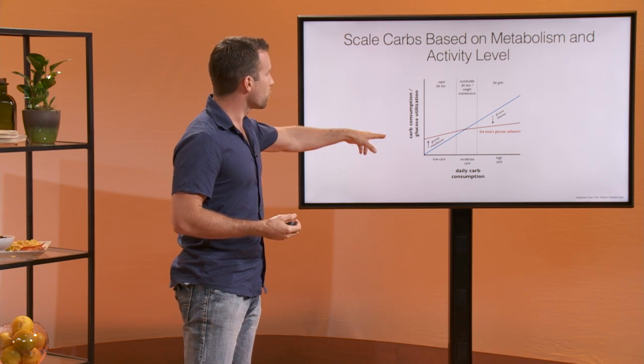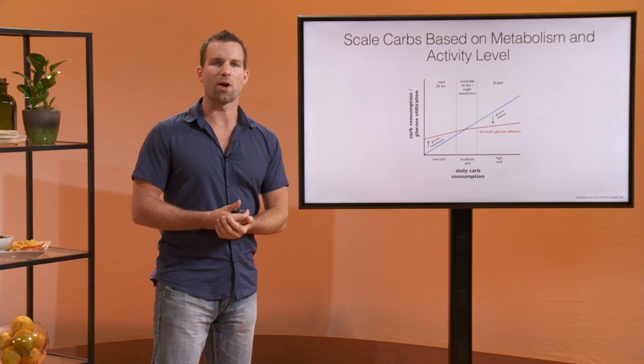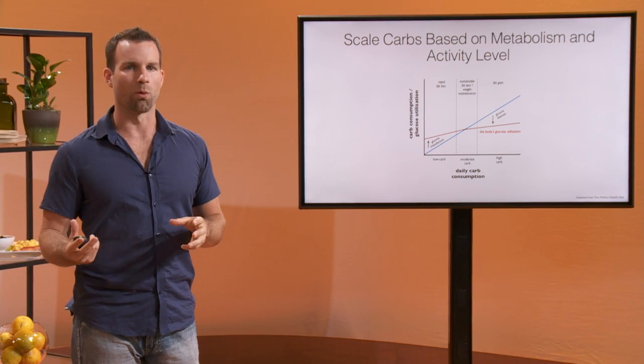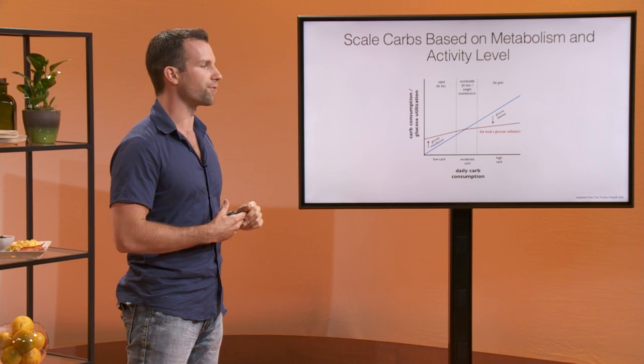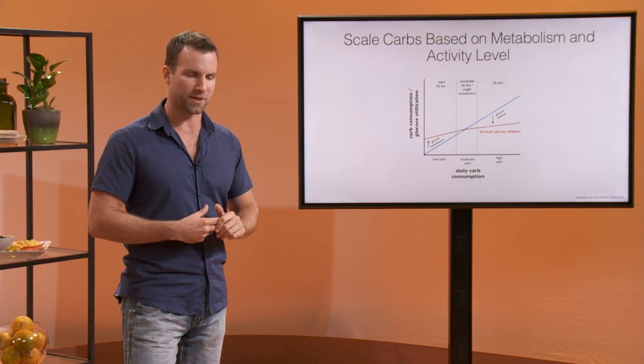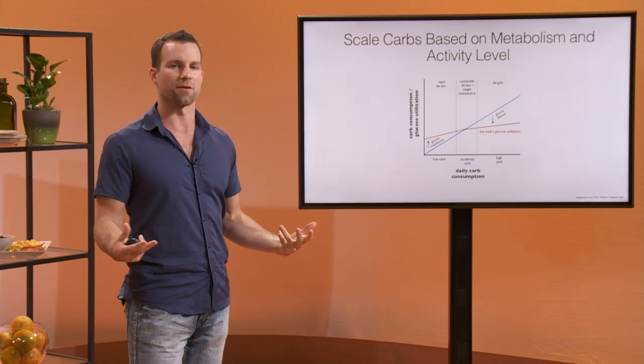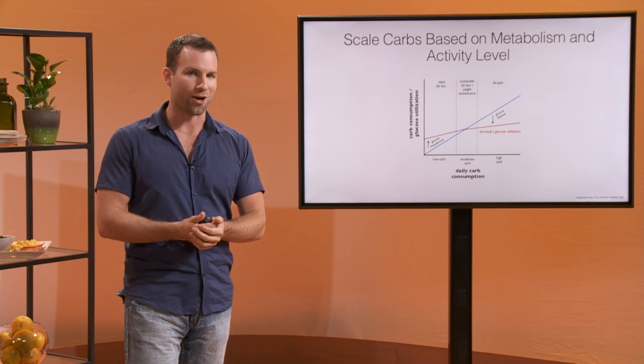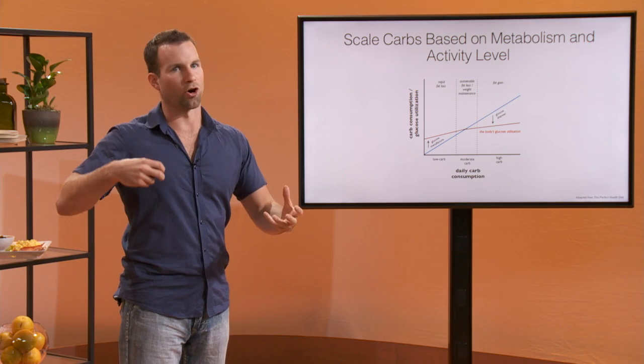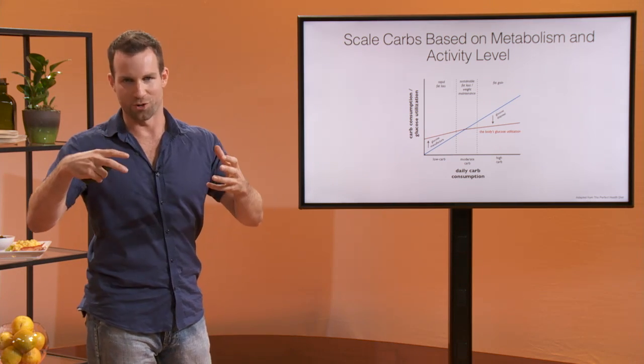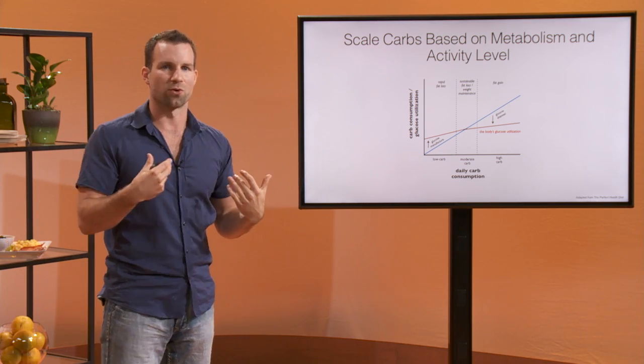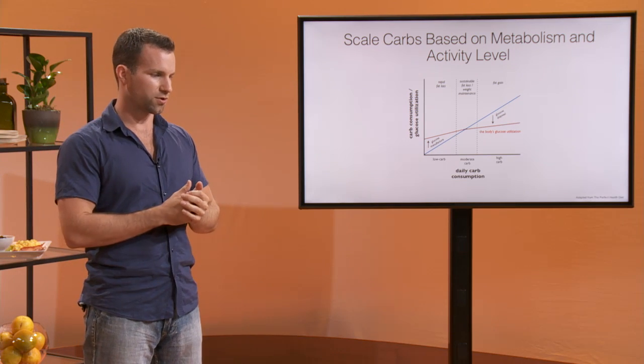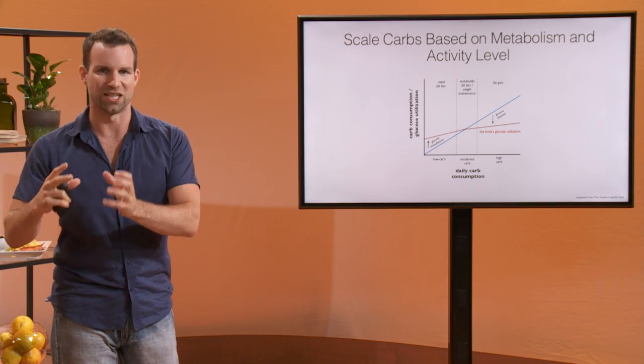When you go super low carb, it can work really well for fat loss as a tactic for a little while. That's why you see Atkins diets work and a lot of other faddish diets will work. When you take the carbs out, your body sheds a lot of the retained water. Water follows carbs, so all of a sudden, your glycogen stores, which are stored carbs in your liver as well as your muscles, start to become depleted. Eventually you go into ketosis.